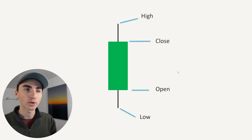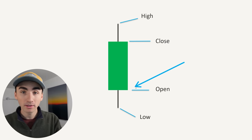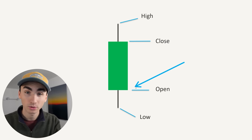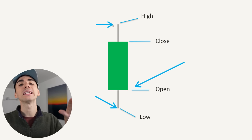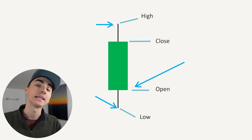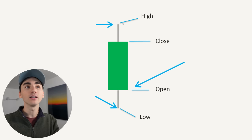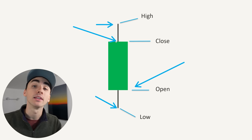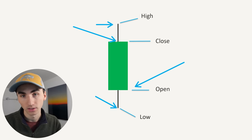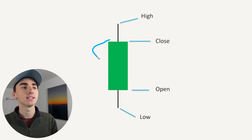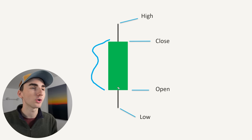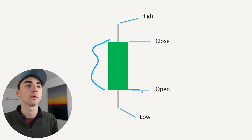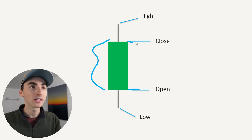All these four points mean is this is where the market opened when the candlestick was made. The low and the high were the extreme prices that it hit, and then where it actually ended up closing. What we have here is called the body of the candlestick, showing you where the open and the close were.